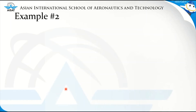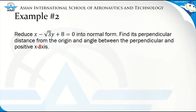Now for the second example, we are asked to reduce x minus square root of 3 times y plus 8 is equal to 0 into its normal form. We must find its perpendicular distance from the origin and the angle between the perpendicular and the positive x-axis. First, we graph our equation of the line.